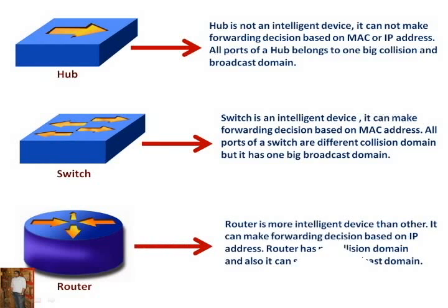Router is a more intelligent device than others. It can make a forwarding decision based on IP address. Router has no collision domain, and also it can separate broadcast domains.